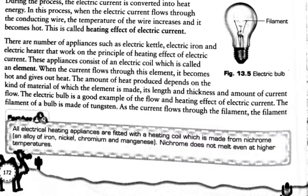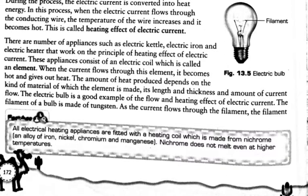When current flows through the element of appliances — which is in the form of an electric coil and which produces heat — this part is called the heating element. When current flows through these elements, the elements become hot and produce heat. The amount of heat produced depends on the nature of the material of which the element is made.